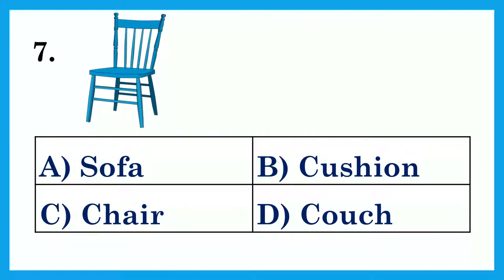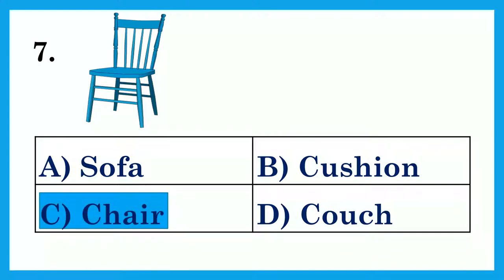Look at the picture and choose the correct word for it. Option A: Sofa. Option B: Cushion. Option C: Chair. Option D: Couch. The answer is Option C: Chair.